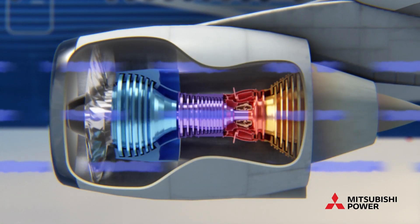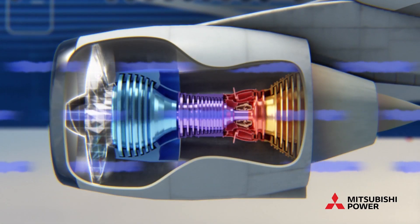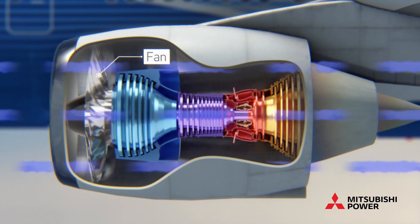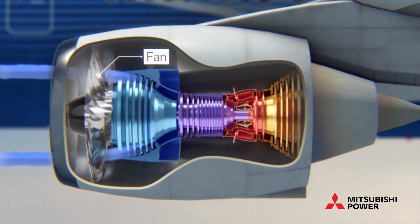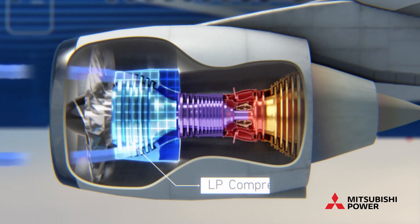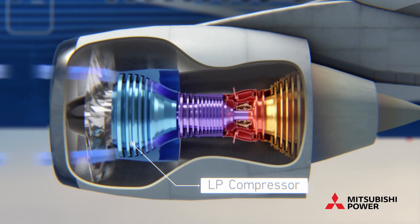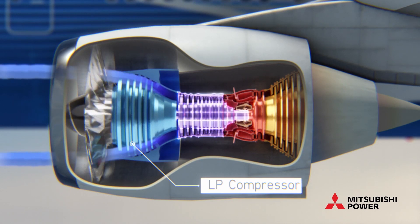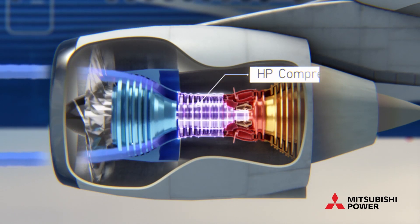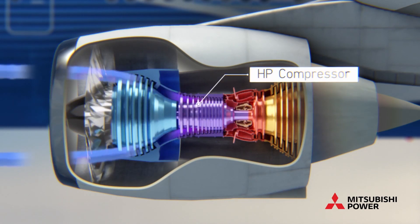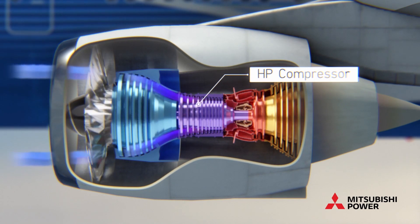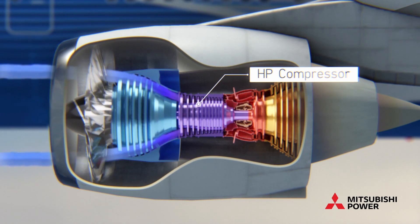First, air enters and is exhausted by a fan, creating most of the thrust. Some air enters the low pressure, or LP, compressor, where it's compressed before reaching the high pressure, or HP, compressor. There, the air is compressed more as part of a continual process.